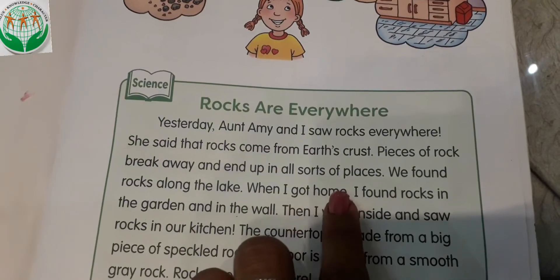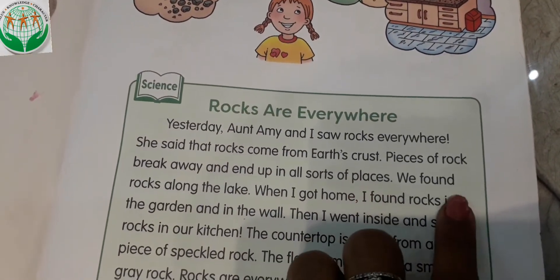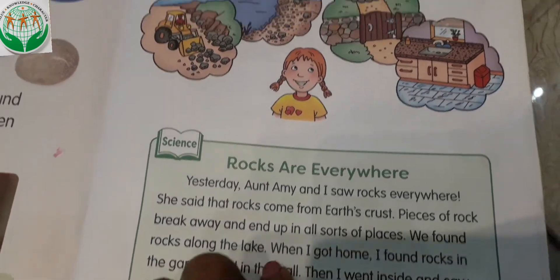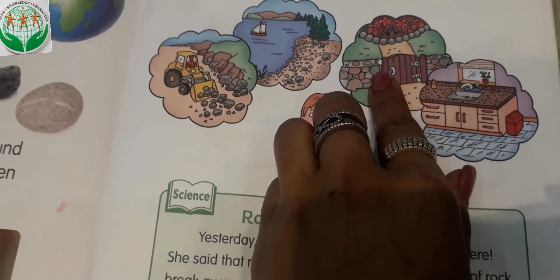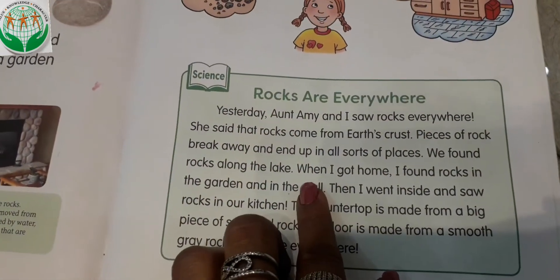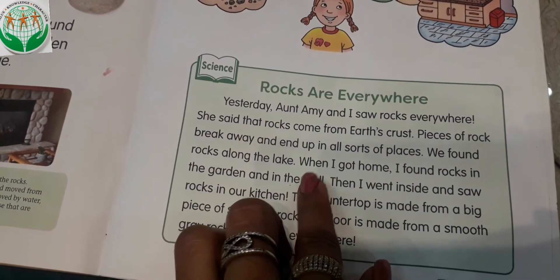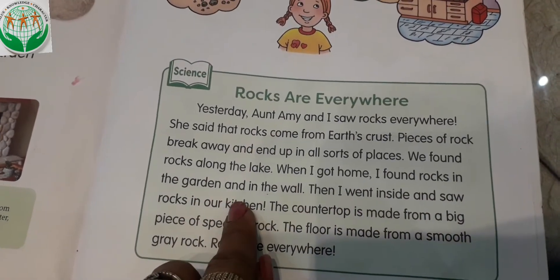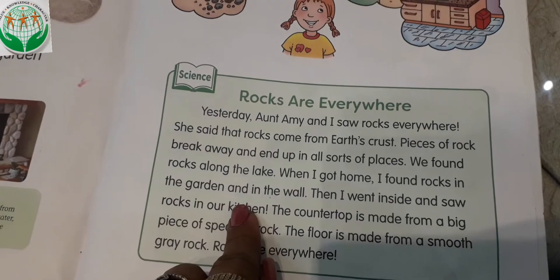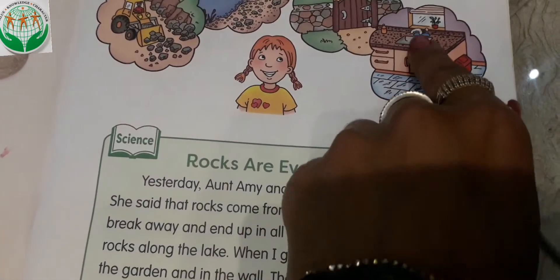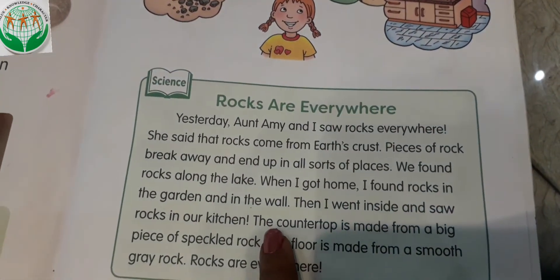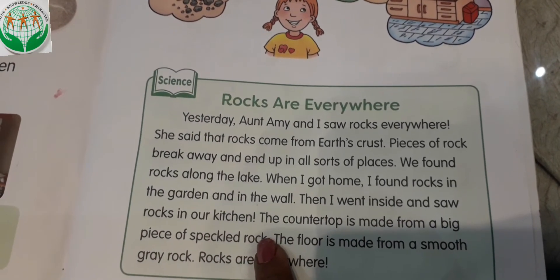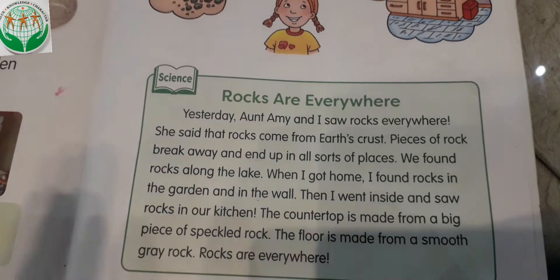When I got home — और जब मैं घर आई — I found rocks in the garden and in the wall. घर में जो tiles लगती है वो भी एक type की rocks होती है। Then I went inside and saw rocks in the kitchen — फिर मैं घर के अंदर गई और मैंने rocks को अपने kitchen area में भी पाया। The countertop is made from a big piece of speckled rock.